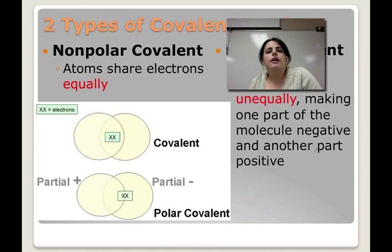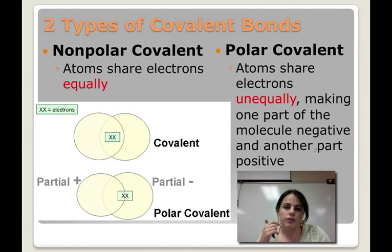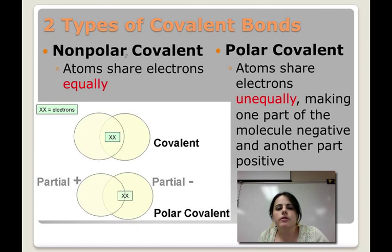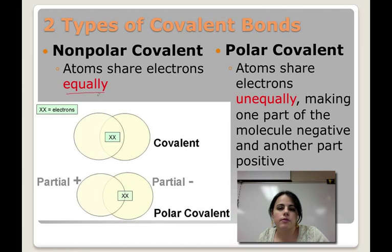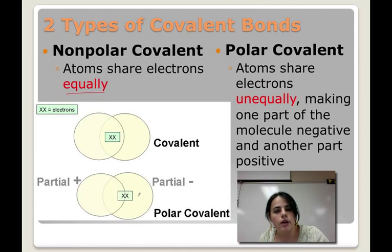Now, covalent bonds actually come in two types: one is called nonpolar and one is called polar. Nonpolar covalent bonds are when the electrons are shared equally between the two atoms — this atom and that atom are pulling equally on the electrons. But in this atom versus this atom down here, you can see the electrons are shifted towards one side. When that happens, we call it a polar covalent molecule.